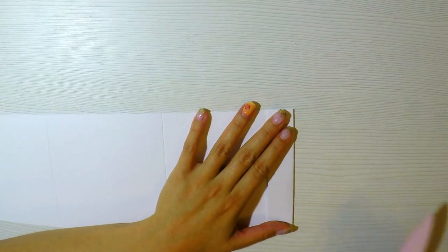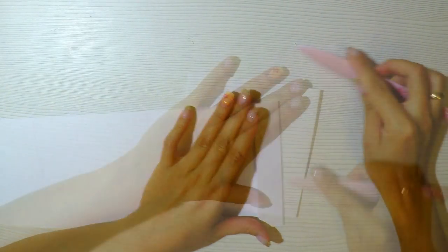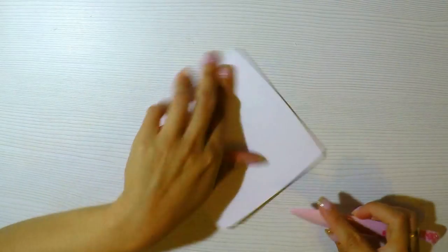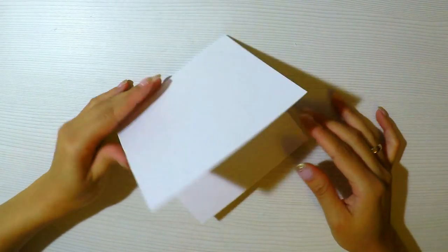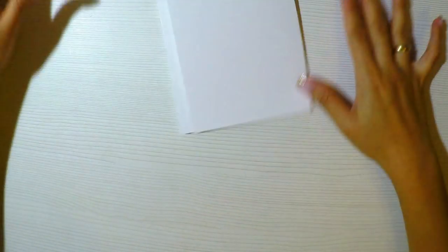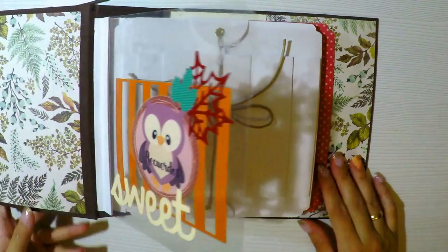Y luego voy a hacer una tercera que va a ser más pequeñita. En este caso va a ser de todo lo largo, que son 60 centímetros, por 15 centímetros de ancho. Estos 15 centímetros de ancho, lo que haré será también plegarlo a los 15, a los 15, a los 15 y así sucesivamente. Y voy a hacer una estructura como esta. Vamos a pegarla.